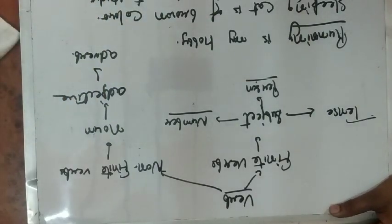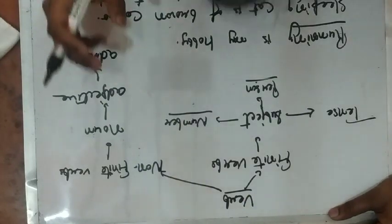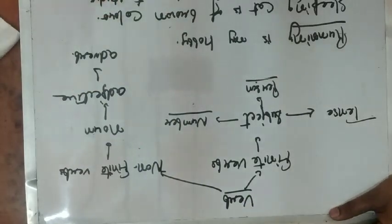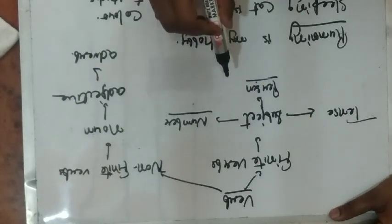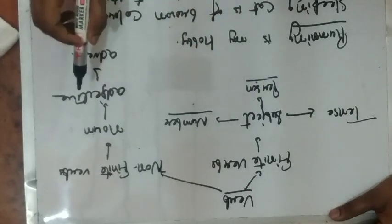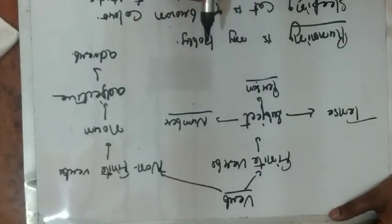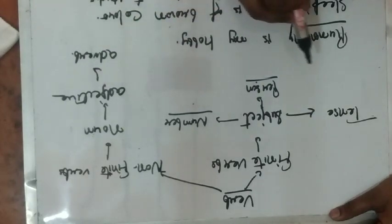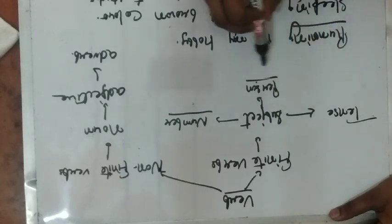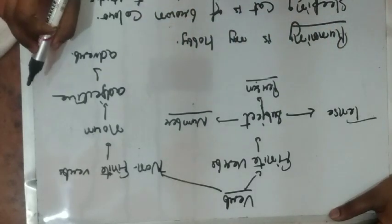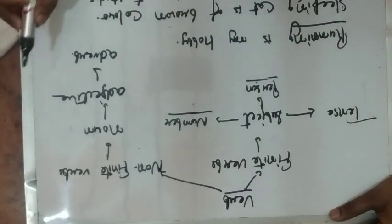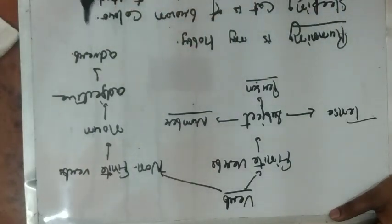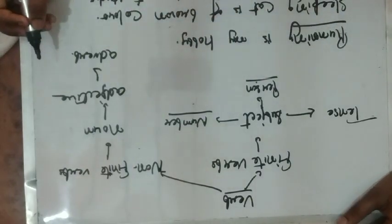So students, let's have a quick recap about verbs — finite verbs and non-finite verbs. Finite verbs change according to tense, person, and number. But non-finite verbs never change according to tense, person, and number. Thanks a lot.